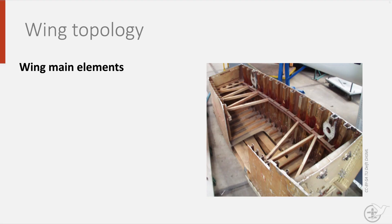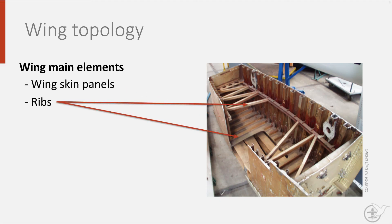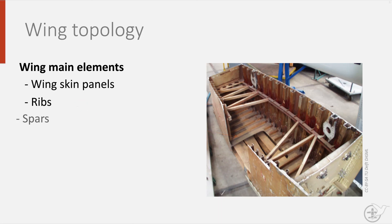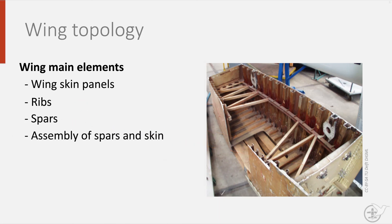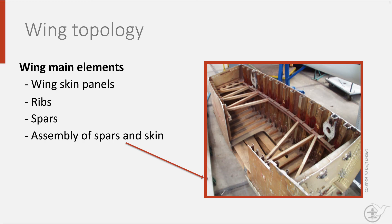The topology of a wing consists of the wing skin panels forming the outer shape, the ribs that maintain the aerodynamic shape and that can be used to introduce loads into the wing, and the spar that keeps the wing from bending. Finally, the assembly of spars and skin that together form a coherent whole that resists the torsion and twisting of the wing. Hopefully this will give you some basic understanding of how aircraft and spacecraft structures are built up.